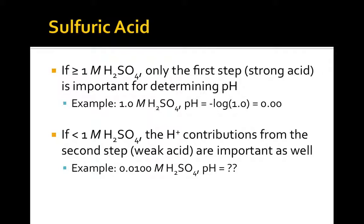On the other hand, in dilute solutions where the sulfuric acid concentration is less than 1 molar, the dissociation of hydrogen sulfate ion produces significant contributions to the total hydrogen ion concentration at equilibrium, and therefore it influences the pH. What then would the pH of a 0.0100 molar sulfuric acid solution be?